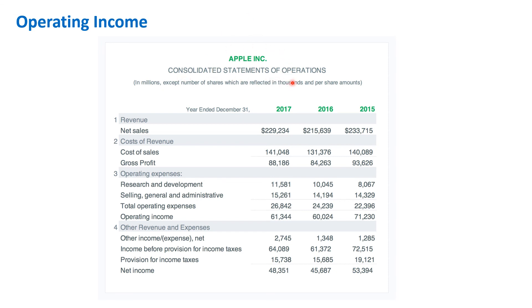We're looking at the P&L statement of Apple Inc. The total revenue for Apple in 2017 is about $229,000 million, out of which the COGS is roughly $141,000 million. Subtracting COGS from total revenue gives the gross profit. From gross profit, you deduct operating expenses — one of which is SG&A, and another is R&D cost, meaning the total amount spent on research and development. Whatever remains after deducting all operating expenses from gross profit is the operating income.